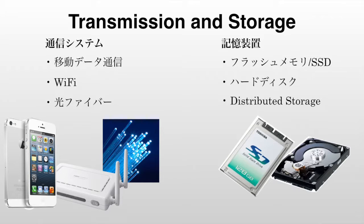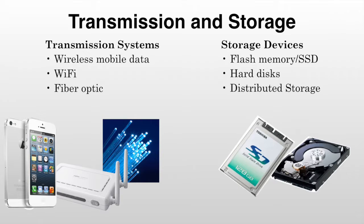Here are some transmission and storage systems you should already be familiar with. Information transmission systems include wireless transmission systems such as mobile data and Wi-Fi, as well as wired transmission systems like fiber optic and ADSL. On the other hand, information storage systems consist of solid-state drives which include flash memories and magnetic hard disks, as well as distributed storage.